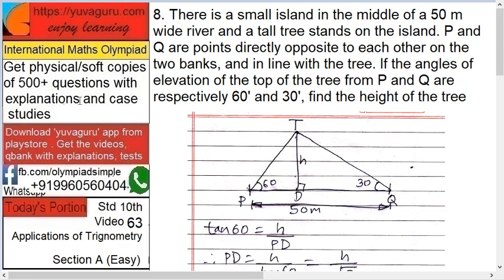1 plus root 3 into root 3, that's 3 upon root 3. We will bring the denominators as 1 equals to 50. Therefore h equals to root 3 on this side, 4 here. 50 root 3 upon 4.